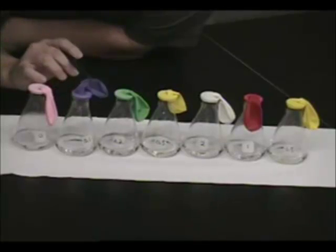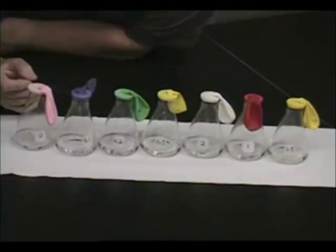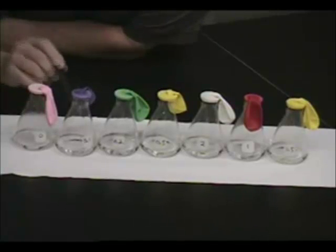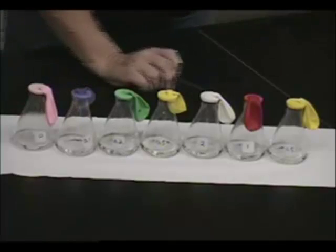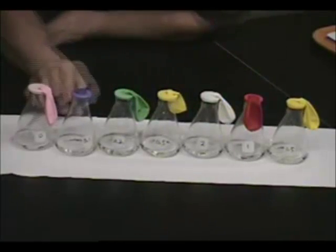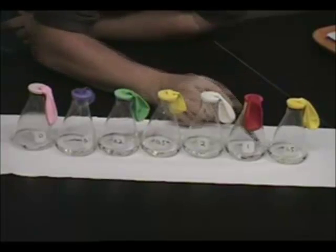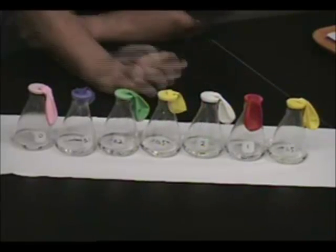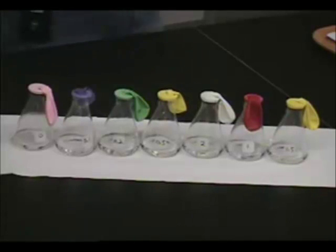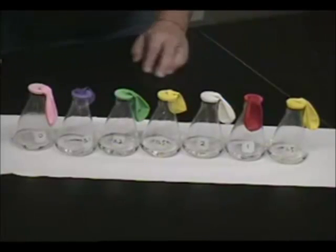We've got a balloon on each of these flasks, and inside the balloon is a small amount of magnesium metal. In the flasks themselves, each of these has exactly the same amount of hydrochloric acid, which is HCl aqueous. HCl is actually a gas, but if you dissolve it in water, you get hydrochloric acid, and hydrochloric acid reacts with magnesium, as you'll see.